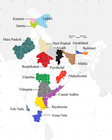Harit Pradesh is a proposed state which would comprise 22 districts of western Uttar Pradesh, currently forming six divisions: Agra, Aligurh, Bairaili, Meirat, Maradabad, Saharanpur, and some parts of Kanpur Division. The most prominent advocate for the creation of the new state is Ajit Singh, the leader of the Rashtriya Lok Dal party. Mayawati also supported the formation of Harit Pradesh in December 2009.